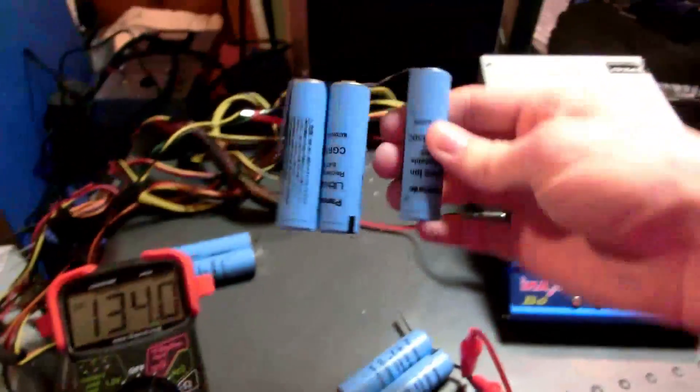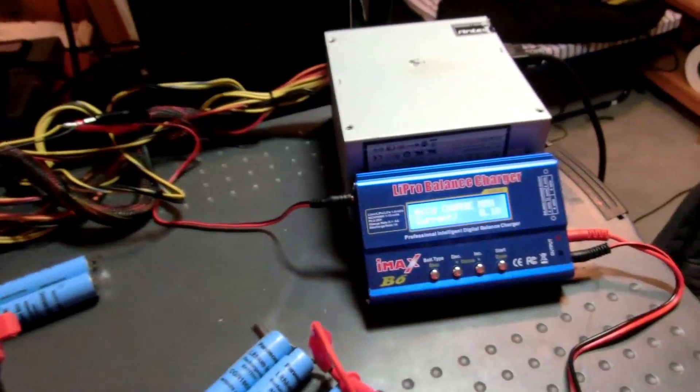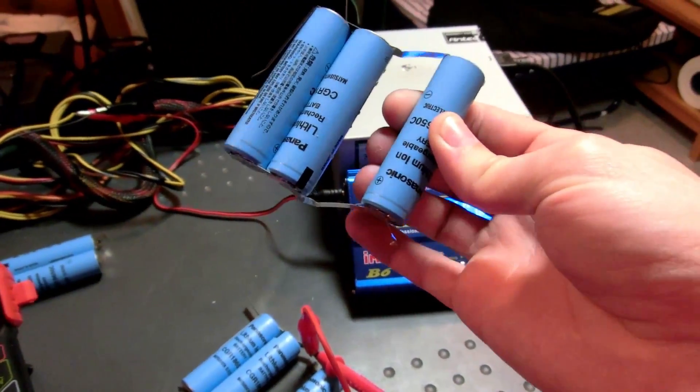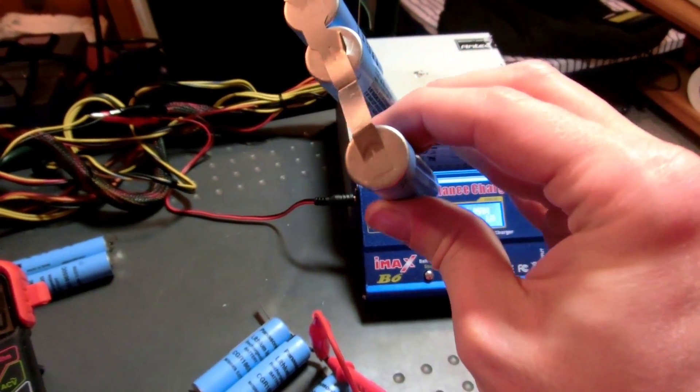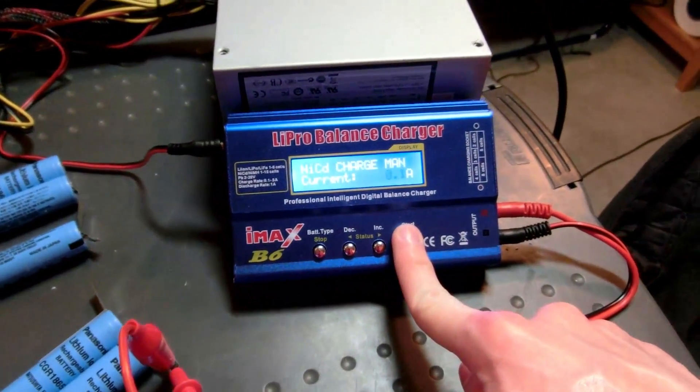But remember, these cells are in parallel, so it's divided by three. So if I charge at 0.1 of an amp, each of these will get only 0.033 of an amp. I say, let's charge and see what happens. See if it blows up.